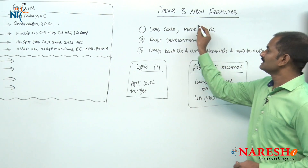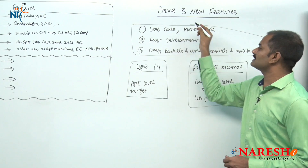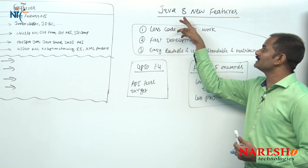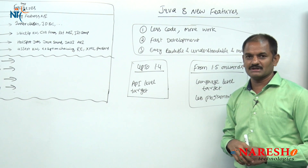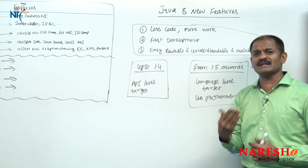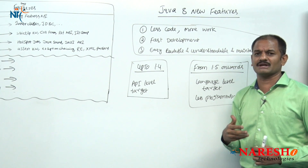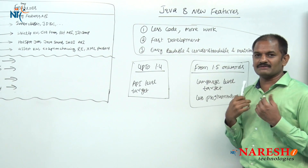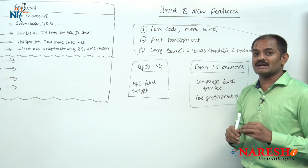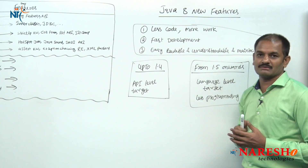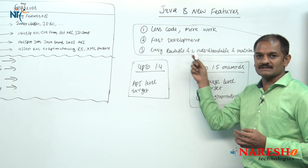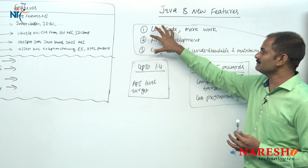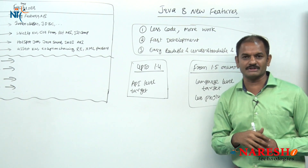These are the three main objectives of Java — or we can say these are the three objectives behind Java people providing new features. Not only Java — any language you take, every time they are adding new features keeping in mind: less code, more work. As a developer I write less code, that less code should perform more work in the background. Fast development and easy readable, understandable, and maintainable code.